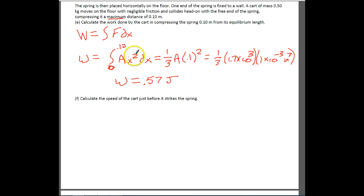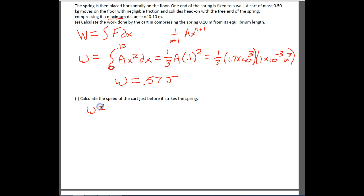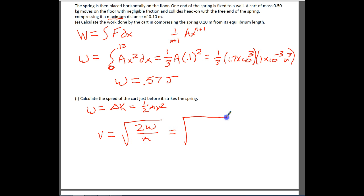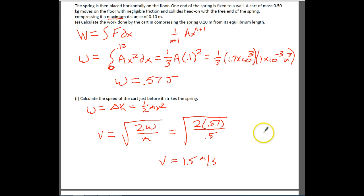The integration is pretty simple — just remember the power rule: for Axⁿ, take n+1 and multiply by 1/(n+1). For part F, calculate the speed of the cart just before it strikes the spring. Using the work-energy theorem: W = ΔKE = ½mv², so v = √(2W/m) = √(2 × 0.57 / 0.5) = 1.5 meters per second. That's our final answer.